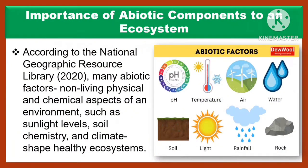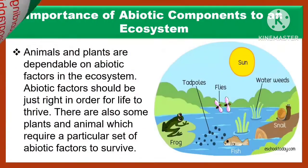The following are the importance of abiotic components to the ecosystem. According to the National Geographic Resource Library 2020, many abiotic factors — the non-living physical and chemical aspects of an environment such as sunlight levels, soil chemistry, and climate — shape healthy ecosystems.